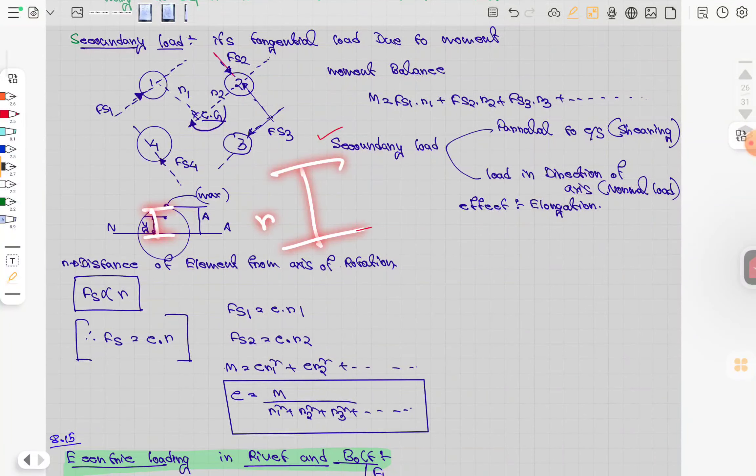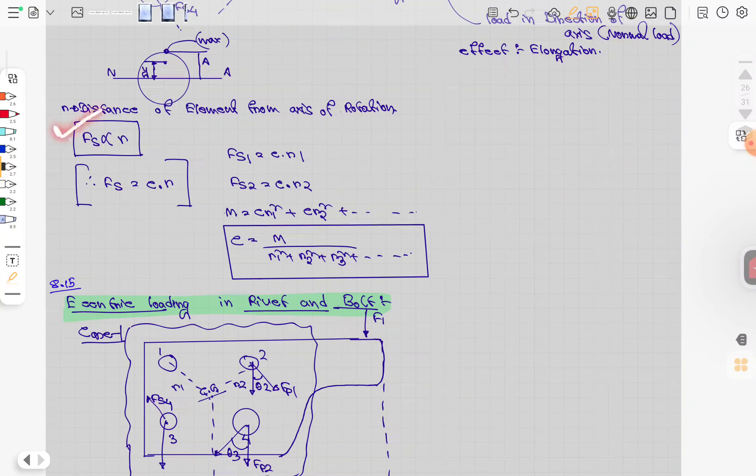More distance means more secondary load effect; less distance means less effect. The secondary force FS is proportional to r. We can write this as e times r or c times r.